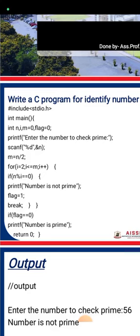If flag equals 1, print that the number is not prime and break. If flag equals 0, the number is prime. Return 0 because we used integer main function, which should return a value where the actual program execution occurs.